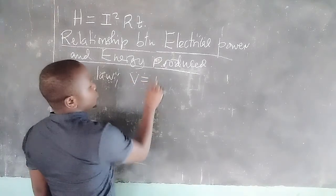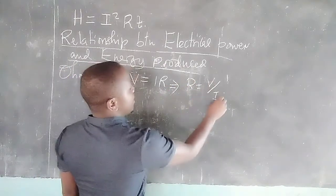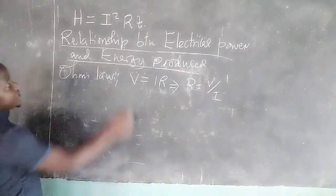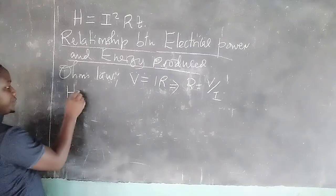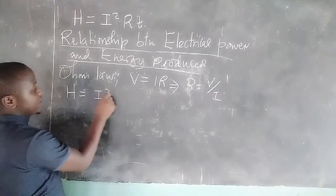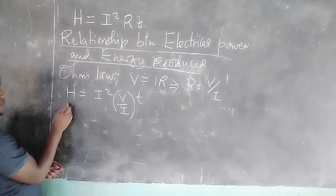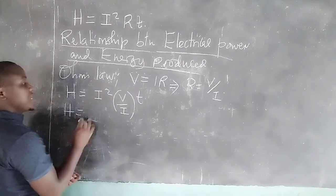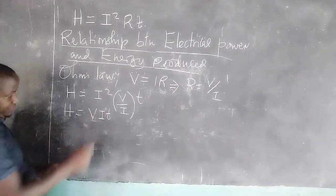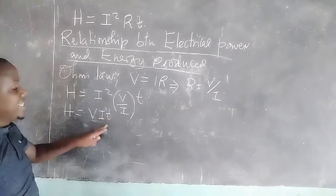Because we know that V = IR from Ohm's law, we can also see that R = V/I. Therefore, in the expression for heat, instead of resistance R we can substitute V/I. So H = I² × (V/I) × T. One I cancels, giving us H = VIT. So the amount of heat energy produced is equal to VIT.